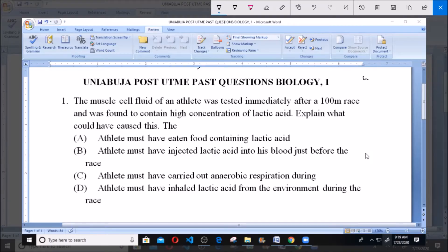Hello, good day and welcome. Today we will be dealing with UniAbuja Post-UTME past questions. Biology question 1: The muscle cell fluid of an athlete was tested immediately after a 100-meter race and found to contain high concentration of lactic acid. Explain what could have caused this.